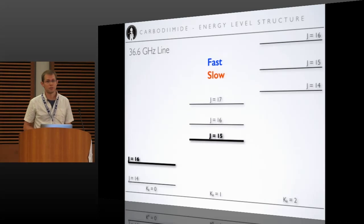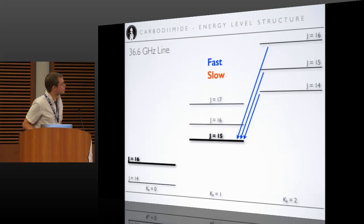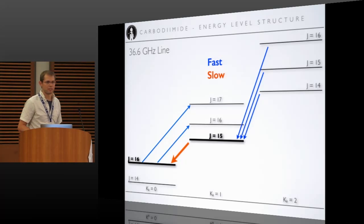Now if you go to the 36 gigahertz lines, which we don't see, again, here's the transitions involved. We have fast transitions into the upper state, fast transitions out of the ground state, and a slow transition between them. So that's initially concerning. This should be masing too. But because the energy level structure is slightly different, there's also a fast transition out of this upper state down to another lower one.